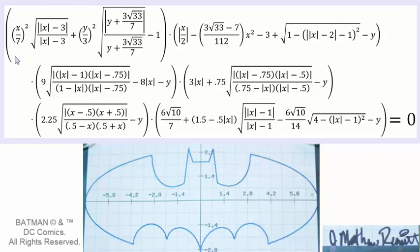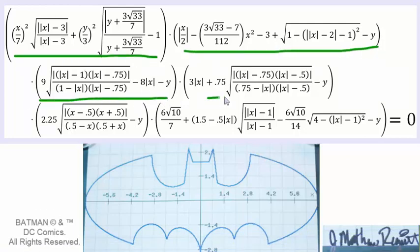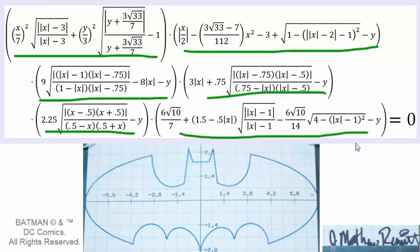This is really one, two, three, four, five, six separate equations sandwiched together using the zero product property. And yes, there's only one equal sign here.